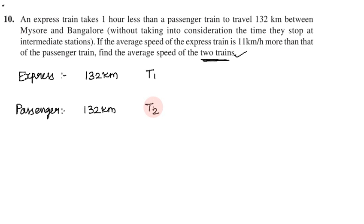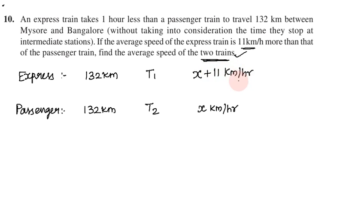The average speed of the express train is 11 km per hour more than that of the passenger train. Since the express train is faster, it takes less time than the passenger train.